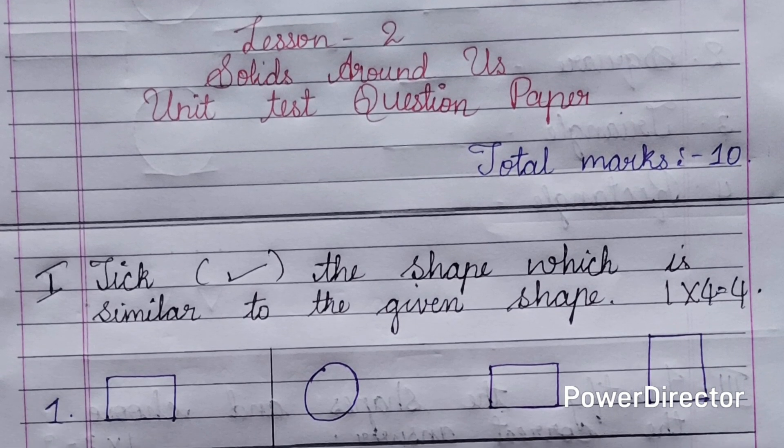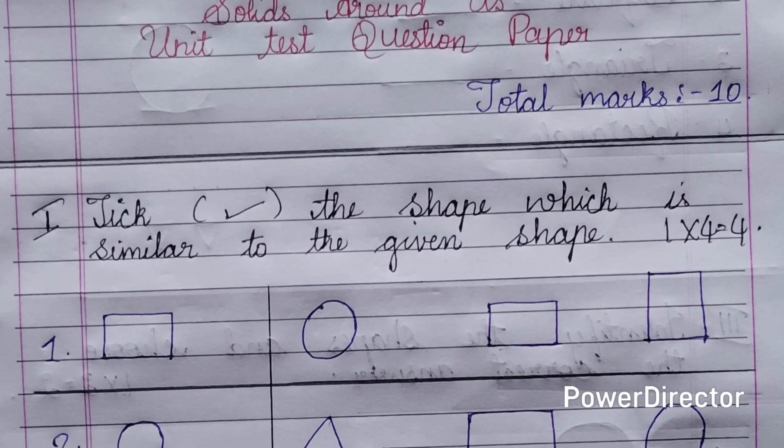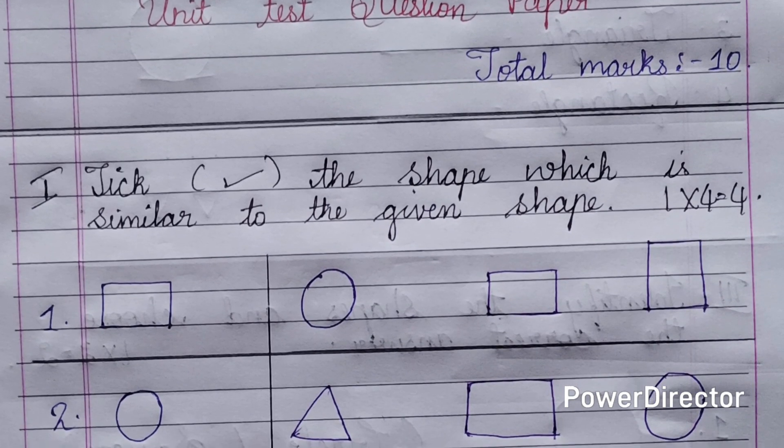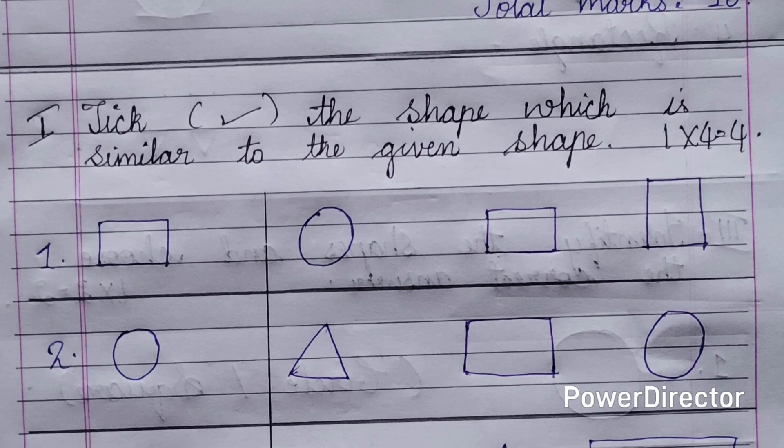The total question paper will be of 10 marks. The first main question is: tick the shape which is similar to the given shape. There are four questions, each carrying one mark, for a total of four marks for this section.